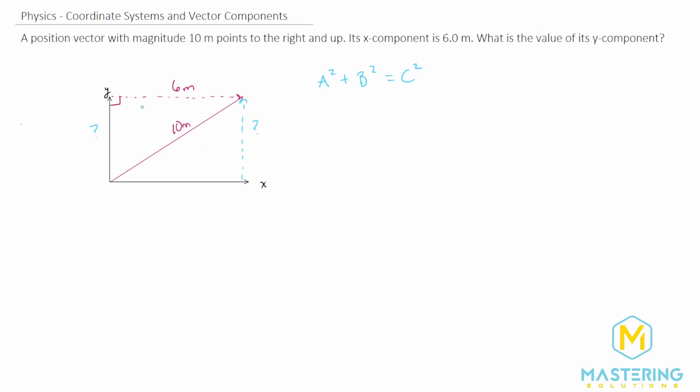Now a and b are of course the shorter two legs, so we're going to say that a is our y component right here. Doesn't really matter, it'll be the exact same. So we want to isolate a, so we'll subtract b squared from both sides of the equation. Now that'll give us a squared is equal to c squared minus b squared.